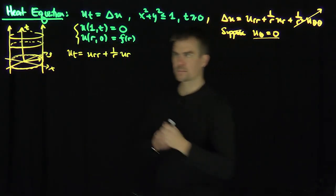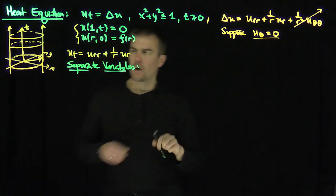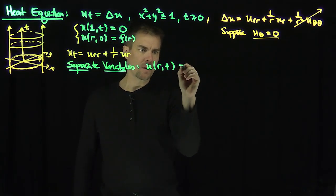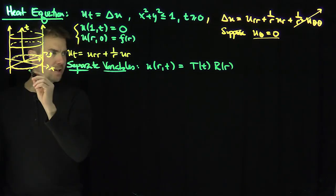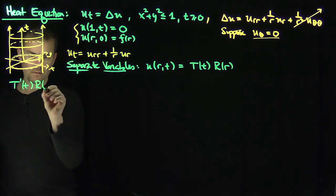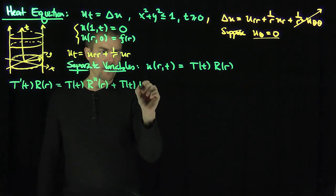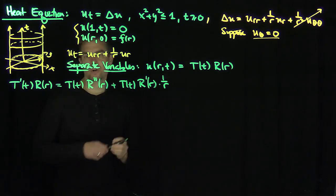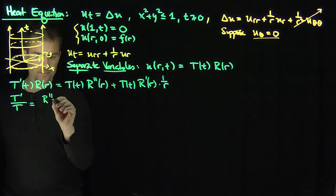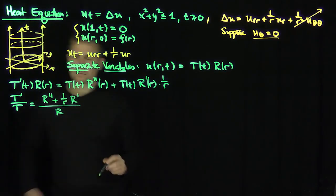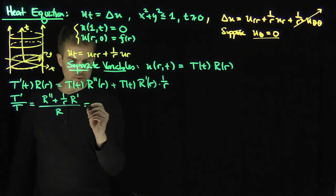Now we separate variables. Let u(r, t) = T(t) · R(r). Plugging in, we get T'(t) R(r) = T(t) [R''(r) + (1/r) R'(r)]. Separating variables: T'/T = R'' + (1/r) R' all divided by R. This equals a separation constant, which we write as negative lambda squared — a negative constant.